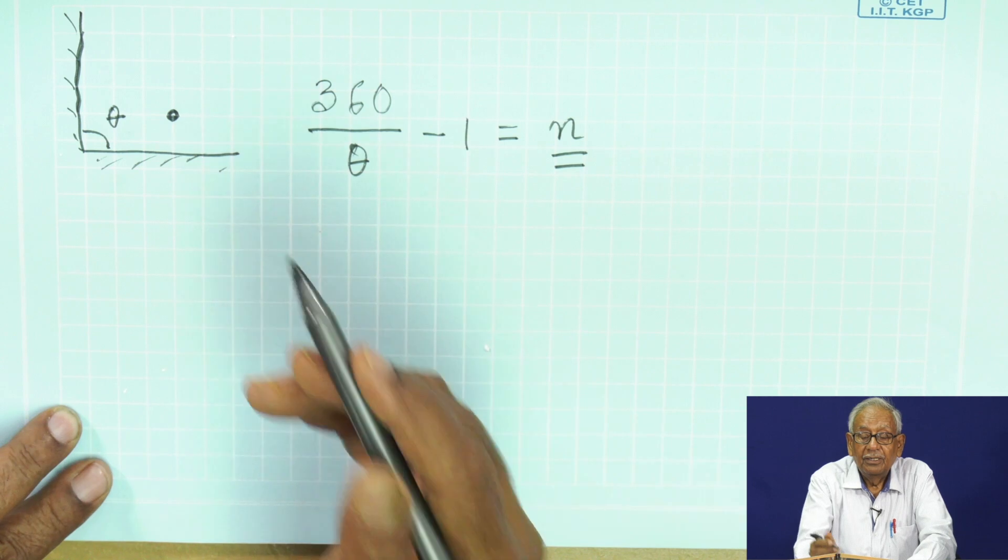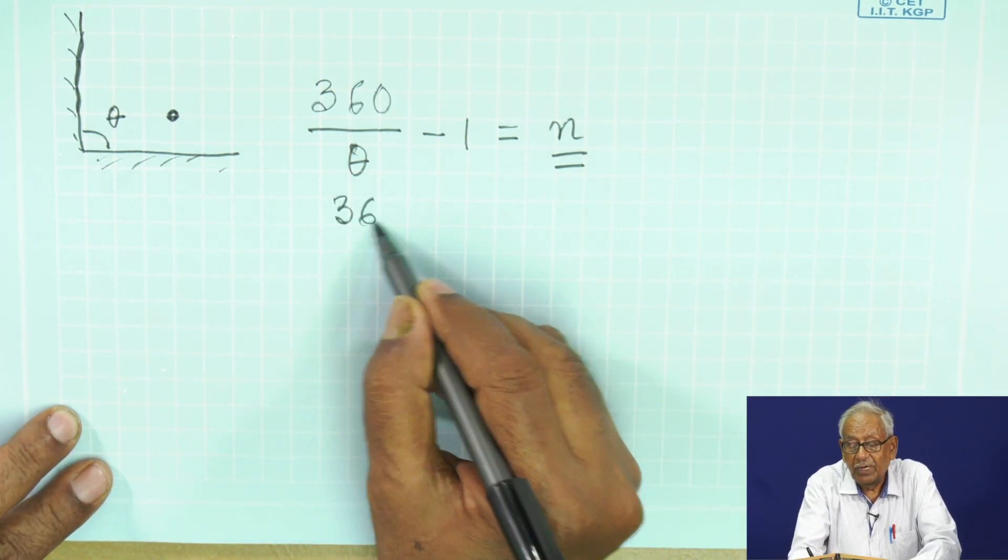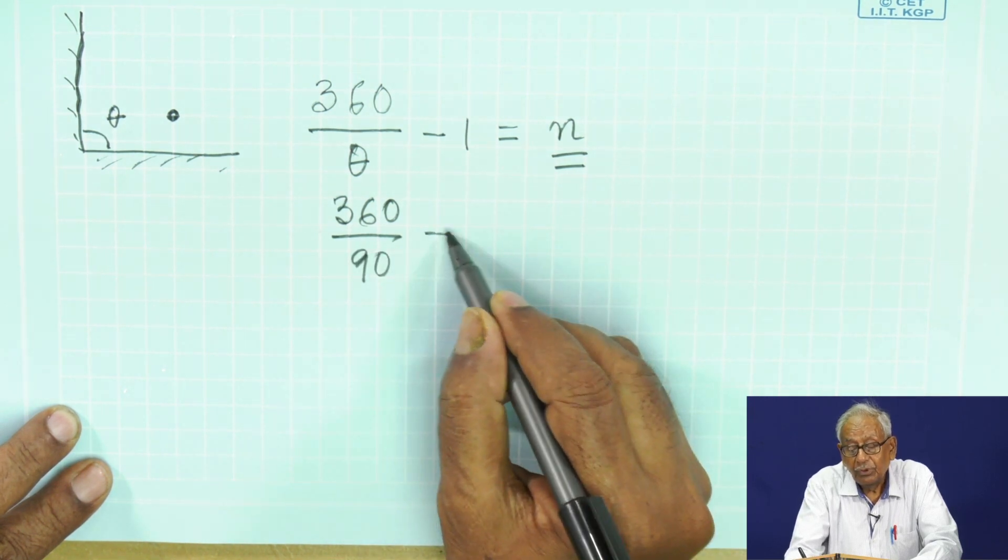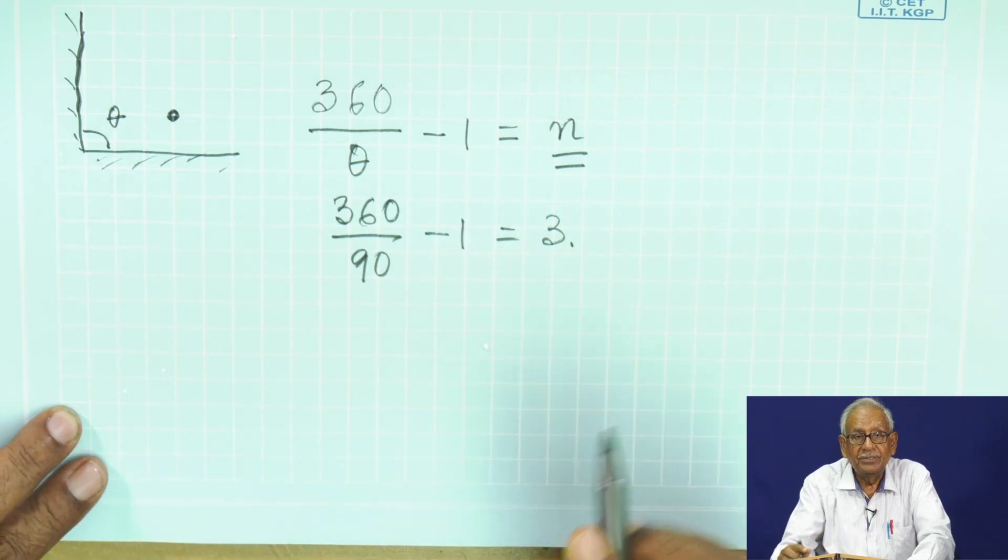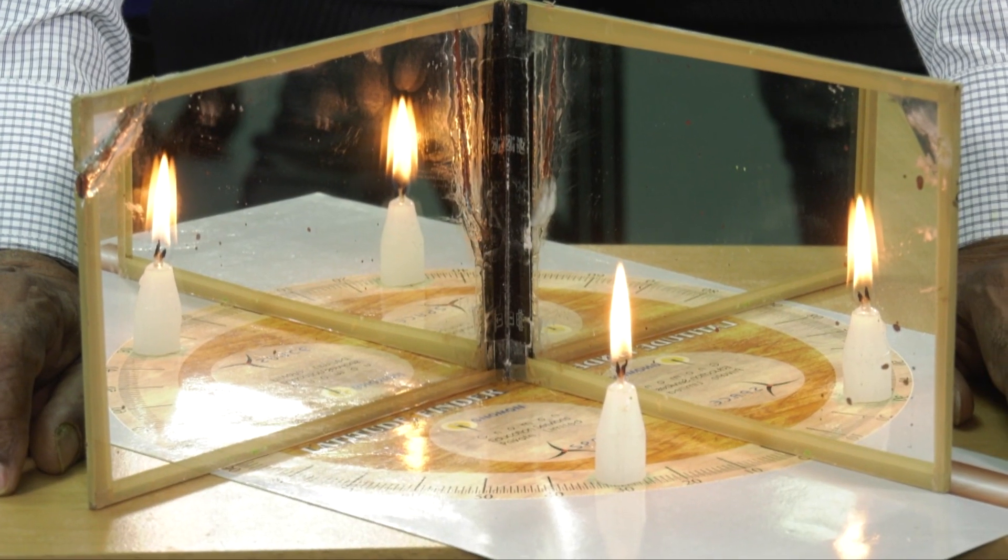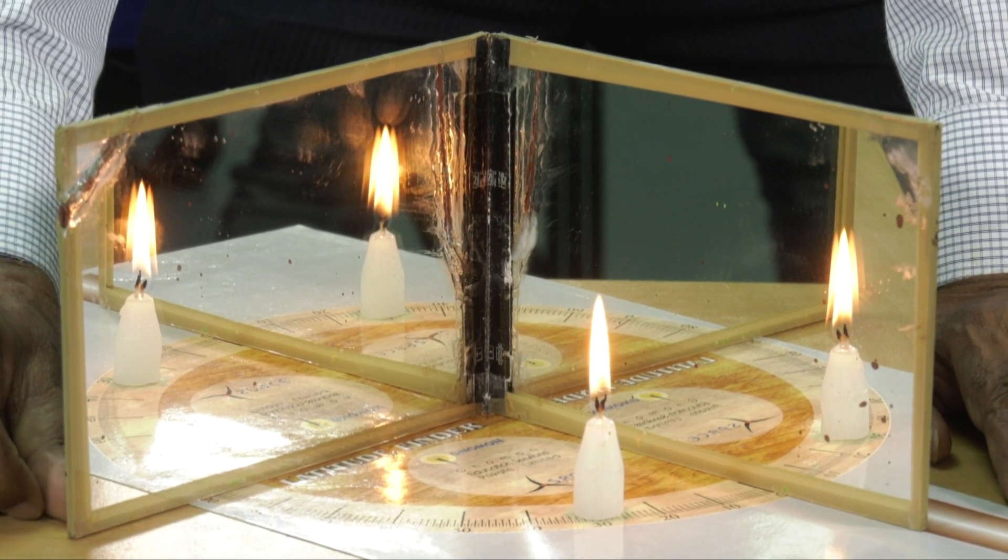If we calculate for 90 degrees: 360 divided by 90, that means 4, so the number of images will be 3. How many images can you see? Within these two mirrors, only three images are there.